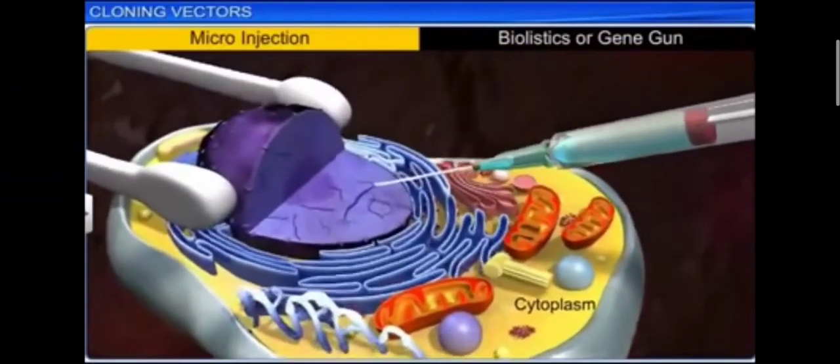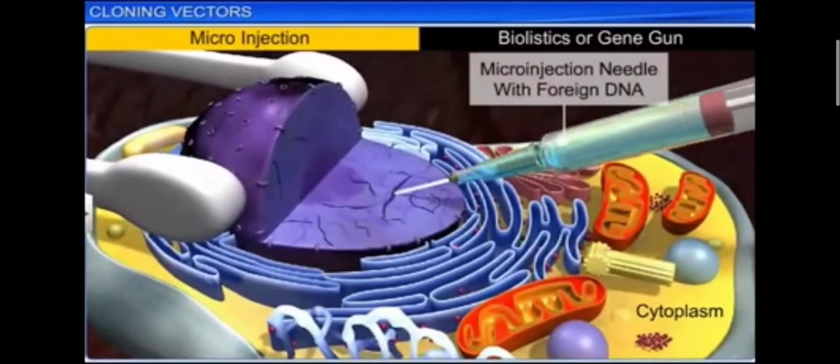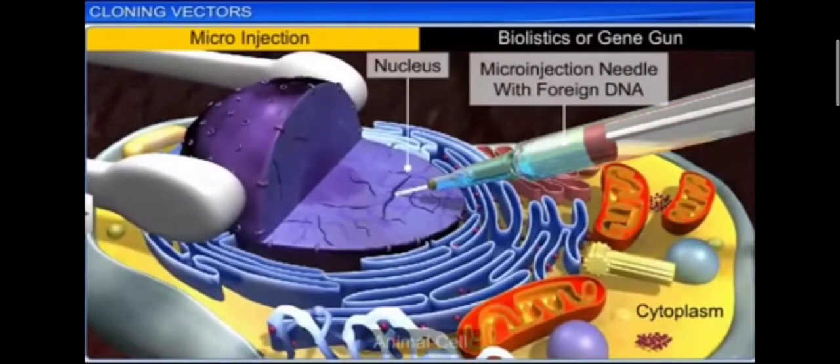The microinjection method involves the direct injection of recombinant DNA into the nucleus of an animal cell.